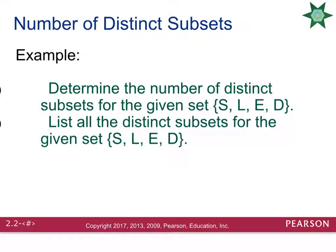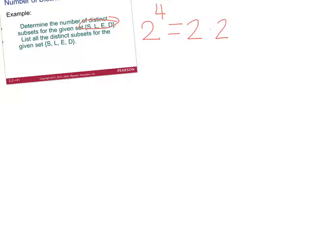Let's look at an example. Determine the number of distinct subsets for the given set: {S, L, E, D}. Using the formula, count the elements — this set has four letters. So you take 2 raised to the fourth power, which is 2 × 2 × 2 × 2. You should end up with sixteen subsets of this set.